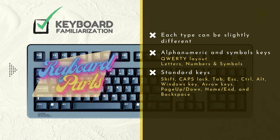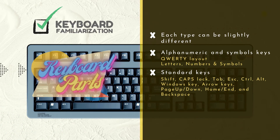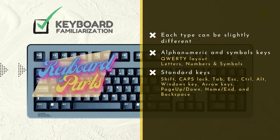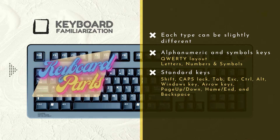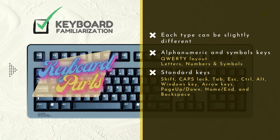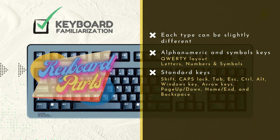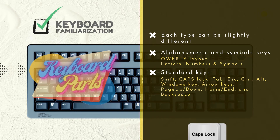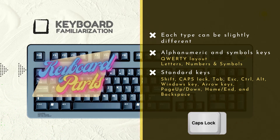You're also going to see a set of standard keys. This can include Shift, Caps Lock, Tab, Escape, Control, Alt, Windows, and Control keys, as well as Page Up and Page Down, Home and Backspace, and even more. These may seem very foreign to you right now, but these are keys that you will use very often. For example, when typing you're going to use the Shift key to make an uppercase letter, or if you want to type in all uppercase, you might use the Caps Lock so you don't have to hold the Shift key.